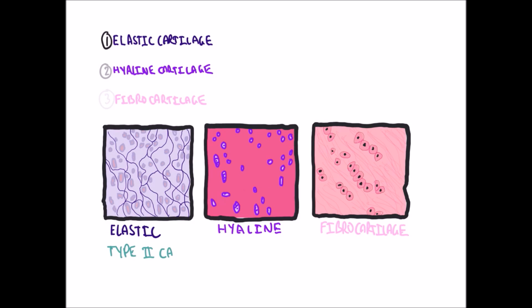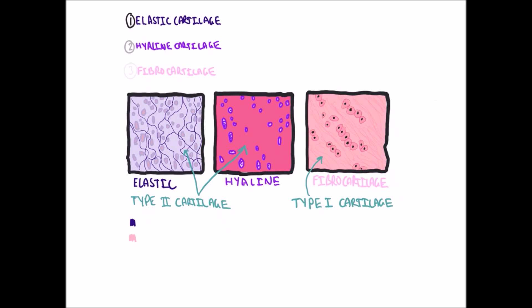Hyaline and elastic cartilages contain collagen type 2, while fibrocartilage contains mostly type 1 collagen fibers and alternates between hyaline cartilage and thick collagen fibers in direction of opposing forces. Elastic cartilage has mostly elastic fibers, with some type 2 collagen. Hyaline cartilage, on the spectrum of quantity, has less collagen than does fibrocartilage.